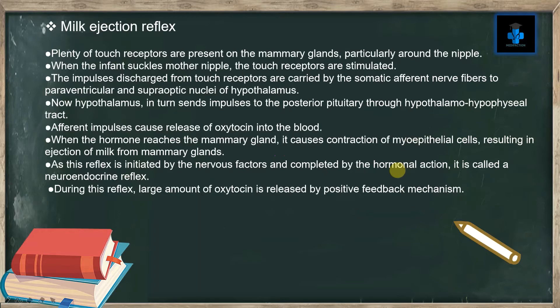Regarding the milk ejection reflex: plenty of touch receptors are present on the mammary glands, particularly around the nipple. When the infant suckles the mother's nipple, the touch receptors are stimulated. The impulses discharged from touch receptors are carried by the somatic afferent nerve fibers to the paraventricular and supraoptic nuclei of the hypothalamus. The hypothalamus in turn sends impulses to the posterior pituitary through the hypothalamo-hypophysial tract.